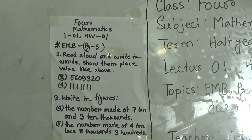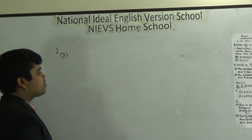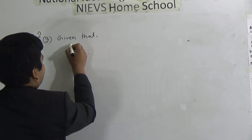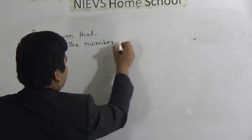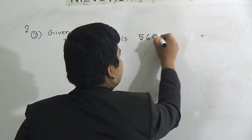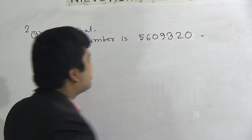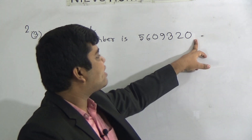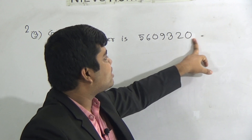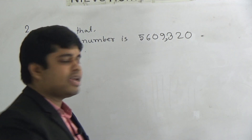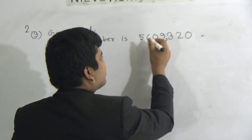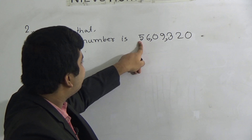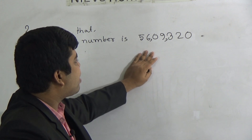So at first, we solve question number 3 of 2. Given that the number is 5,609,320. First, we need to learn the use of comma in a number. From the right hand side, we count: first we take 3 digits and give 1 comma — 1, 2, 3 — then each time we take 2 digits and give a comma: 1, 2, then comma, 1, 2. No need to write another comma because there are no digits before this last 2-digit group. I hope you have understood how to put a comma.